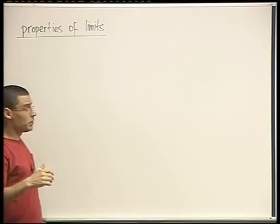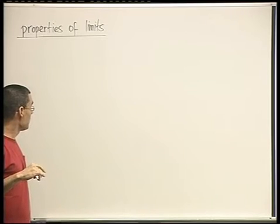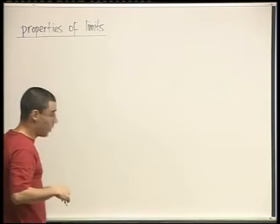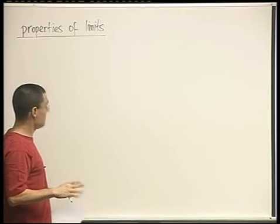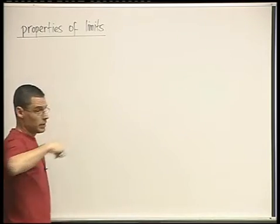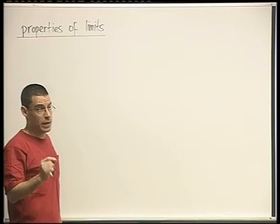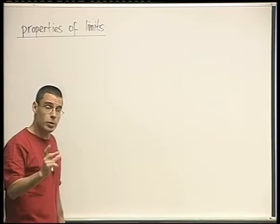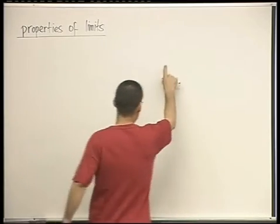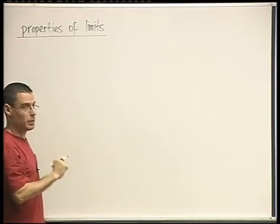Okay, so now that we know the definition of the limit, and after having said that we're not going to work with it too much, we want to know how are we going to work with limits, and it takes two different routes. One is the positive one, how do we calculate limits when they exist? And another is a discussion of how to figure out when a limit exists or not in more subtle situations when we can't just use the nice and elegant properties that I'm going to write now.